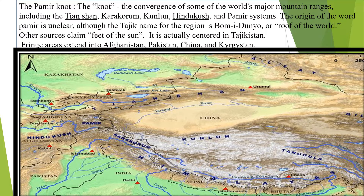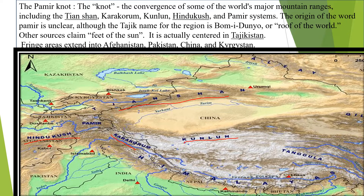The word 'knot' refers to the convergence of some of the world's major mountain ranges, including Tian Shan, Hindu Kush, Karakoram, and Kunlun. The origin of the word Pamir is still unclear. Although the Tajik name for this region is 'Bomeyuddinyo' or 'Roof of the World', other sources claim 'feet of the sun'. The Pamir knot is actually centered in Tajikistan, and the fringe areas extend into Afghanistan, Pakistan, China, and Kyrgyzstan.